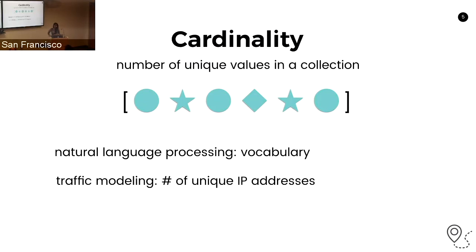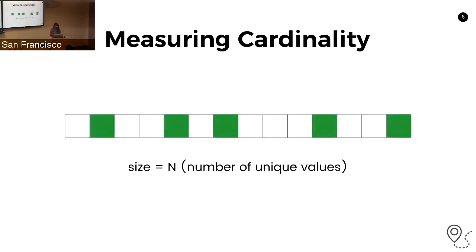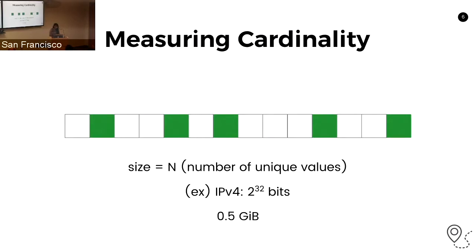With traffic modeling, a low number of unique IP addresses generating all the traffic you're seeing could be indicative of a denial of service attack. A simple way to measure cardinality is to initialize a bitmap of the number of unique values you might be seeing. If there are n possible values, you initialize a bitmap of size n. For IPv4 addresses, you'd initialize a bitmap of 2 to the 32 bits, which is about half a gigabyte.